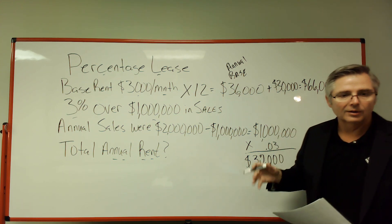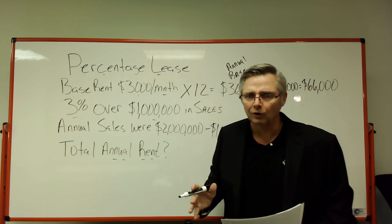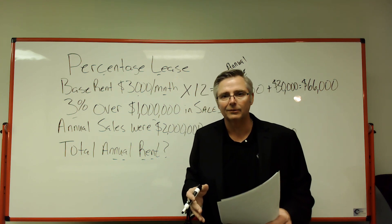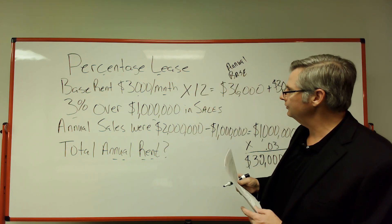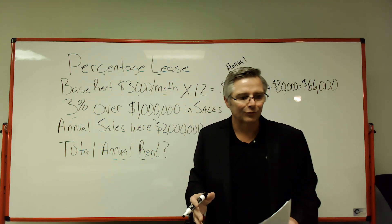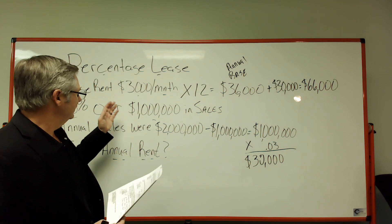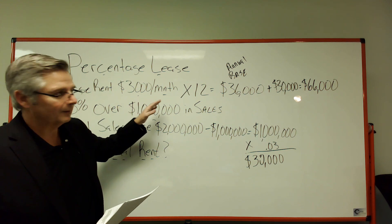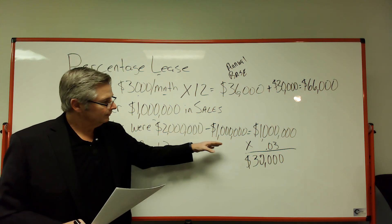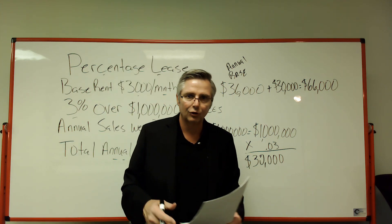That is what we call a percentage lease, or an overage lease. Make sure you practice these - try to keep it simple, don't overthink it. We really didn't do anything more difficult than some multiplication, subtraction, and addition. You just have to know where the numbers go. If they ask for an annual number, turn that monthly number into an annual number, find out how much over the threshold, multiply by the percentage, then add them together. This one is sixty-six thousand dollars total annual rent.